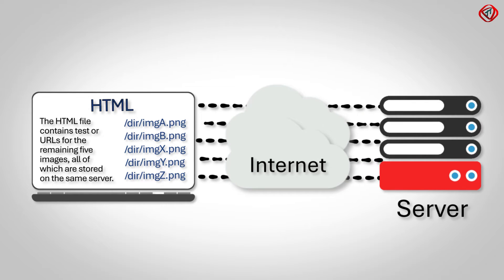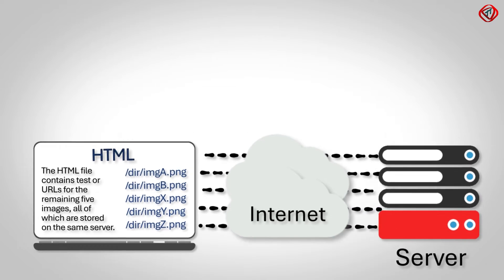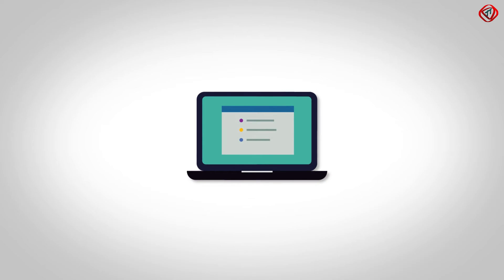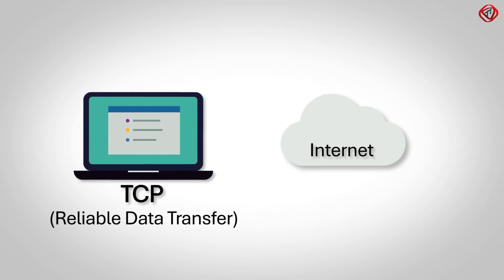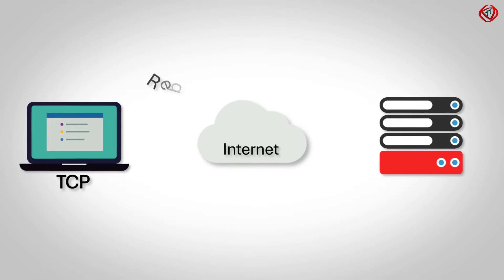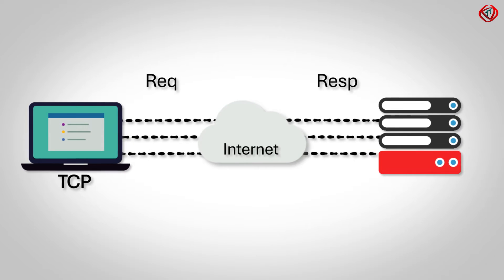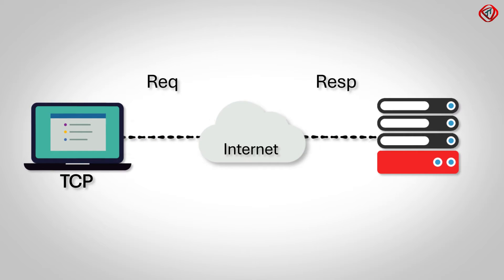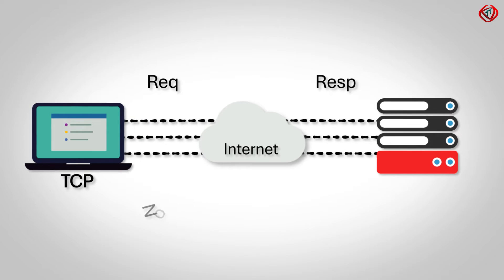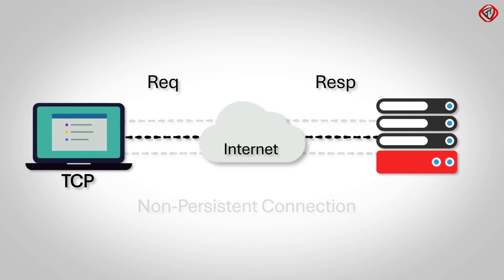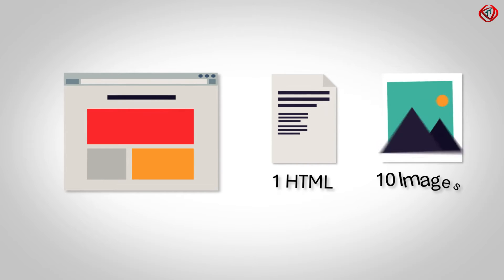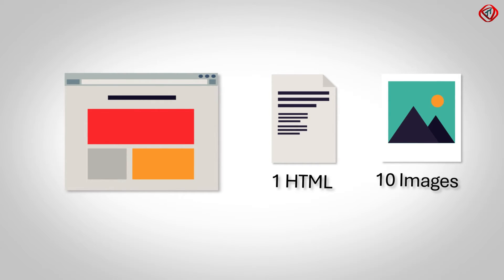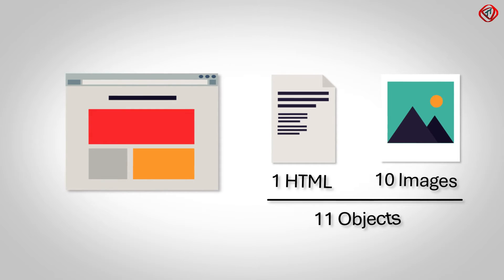Let us now discuss HTTP with persistent and non-persistent connections. If we are developing an application that utilizes the internet and we choose to use TCP for its transport layer services, then we have to decide whether each request-response pair should be sent over separate TCP connections or if all requests and their responses should be sent over one TCP connection. The first method is called a non-persistent connection and the second method is called a persistent connection. Consider a web page consisting of one HTML file and 10 images present on the same server, meaning there are 11 objects on the web page.